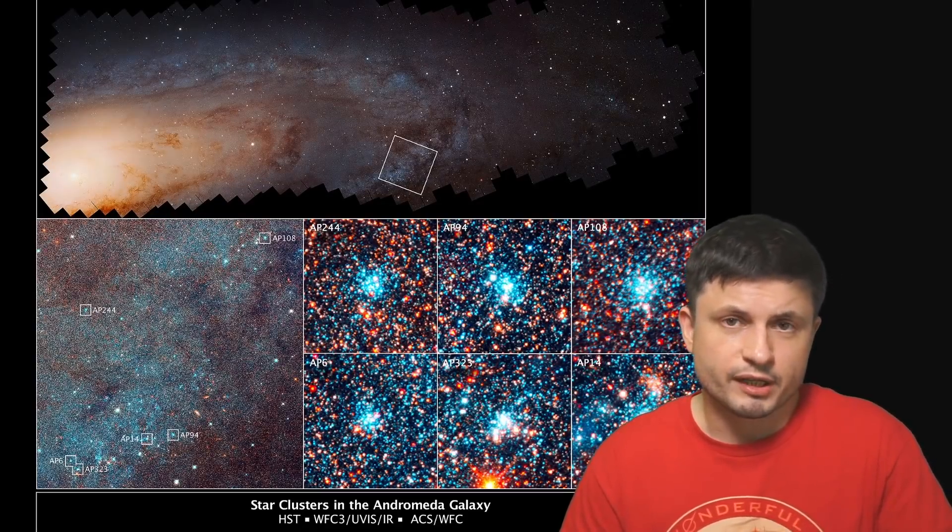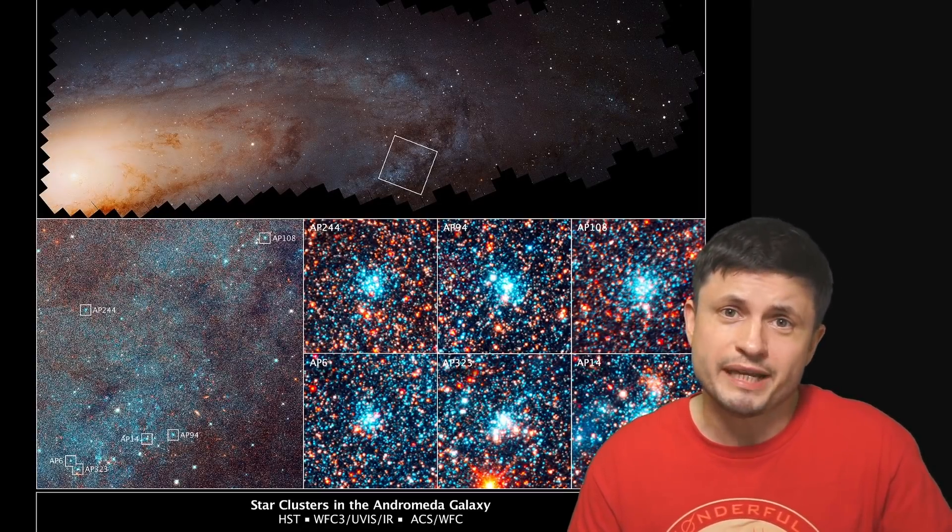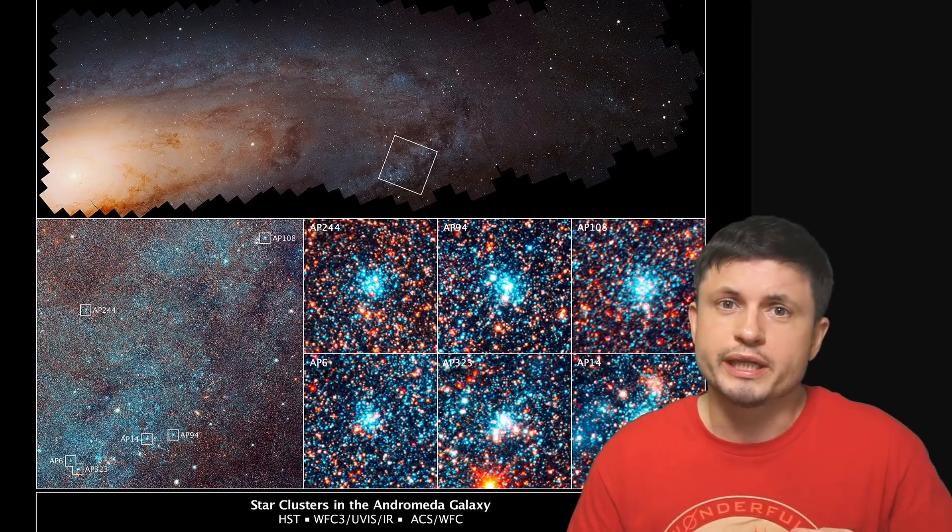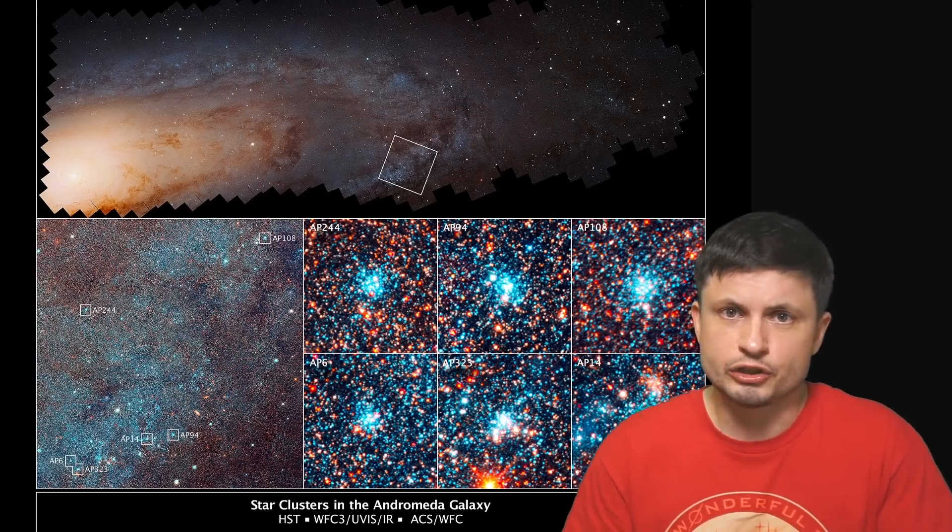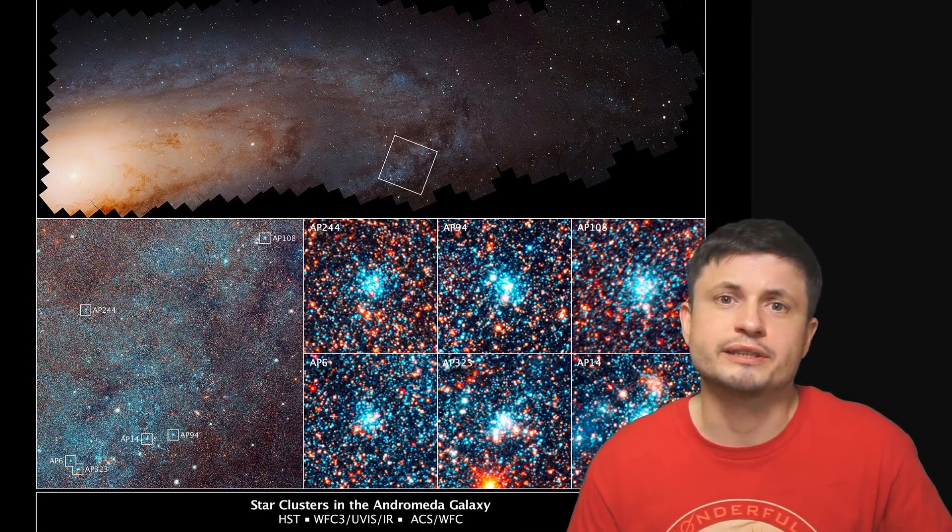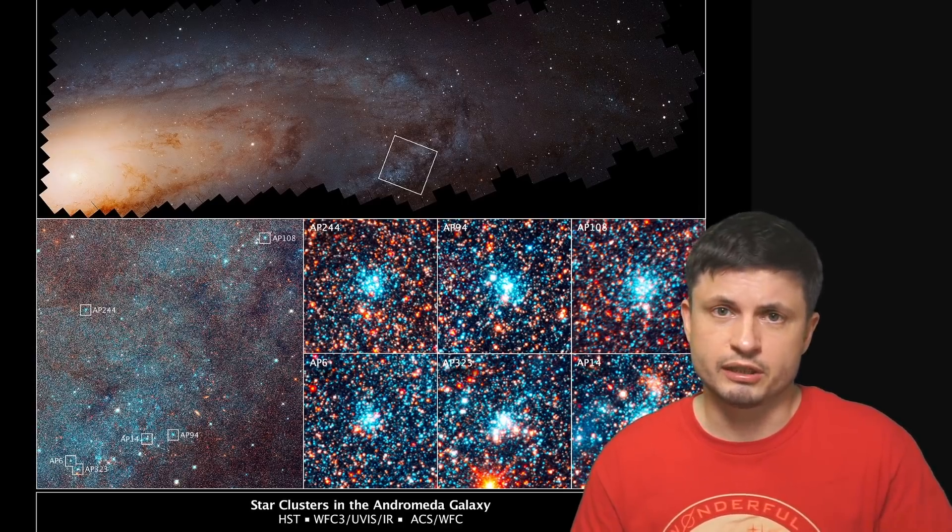So what about this study? Well, they were actually studying one of the many globular clusters located in the Andromeda galaxy. Andromeda has roughly around 460 different globular clusters, or approximately three times as many as in the Milky Way galaxy. And according to a lot of modern theories, a lot of these globular clusters are basically leftovers of ancient galaxies, usually smaller galaxies, for example, dwarf galaxies.